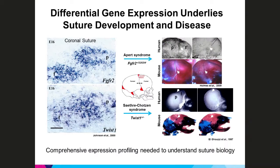On the right you can see the results of mutations of these genes on coronal suture development. Activating mutations of FGF receptor 2 cause the Apert craniosynostosis syndrome in humans. Normally the coronal suture is open, as seen in the left panel of the normal embryonic human skull. But in Apert syndrome, shown on the right, the coronal suture fuses, impairing skull growth. This phenotype is recreated in our mouse model, where on the left you can see the open coronal suture, and on the right the suture is fused in the Apert mouse.